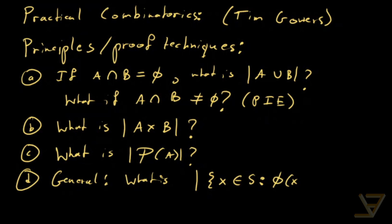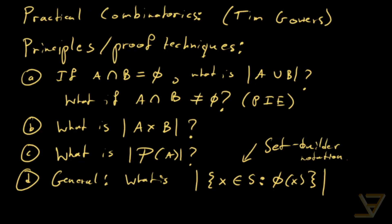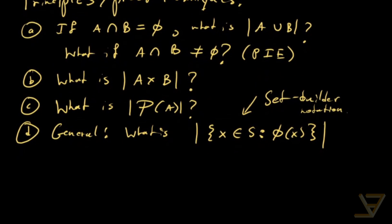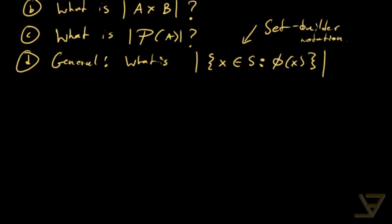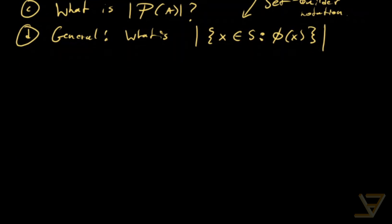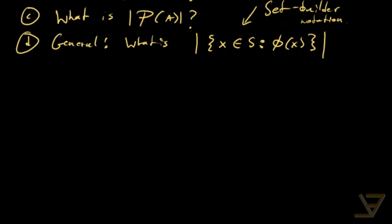So, phi of x is some predicate in the variable x. So, this is some general description in set builder notation. And we often want to determine the cardinality of a set or approximate it based on a description in set builder notation.